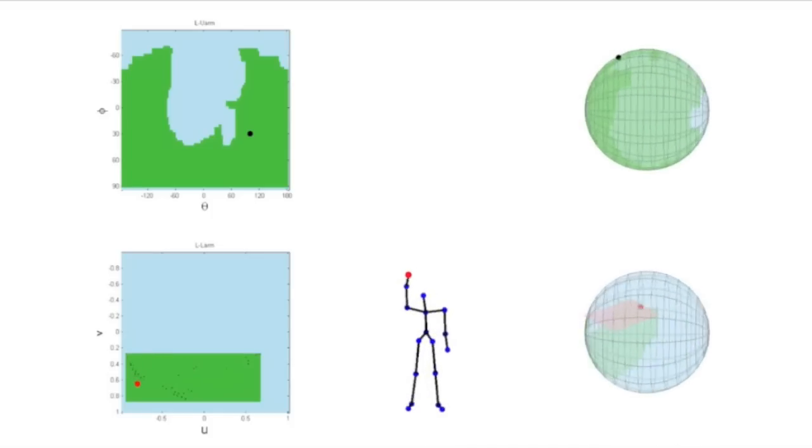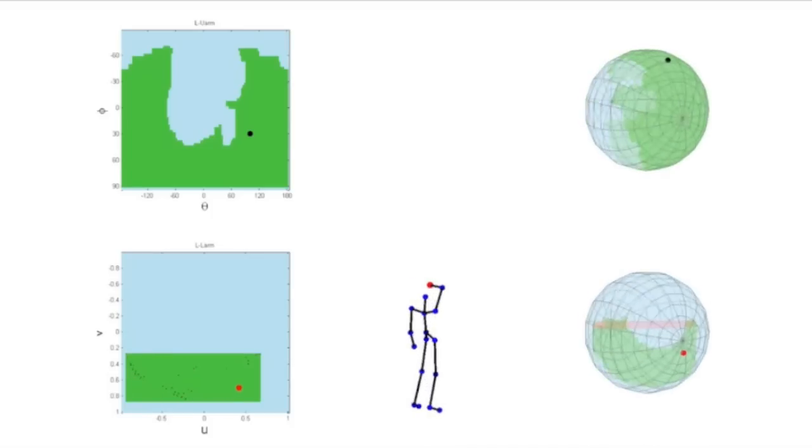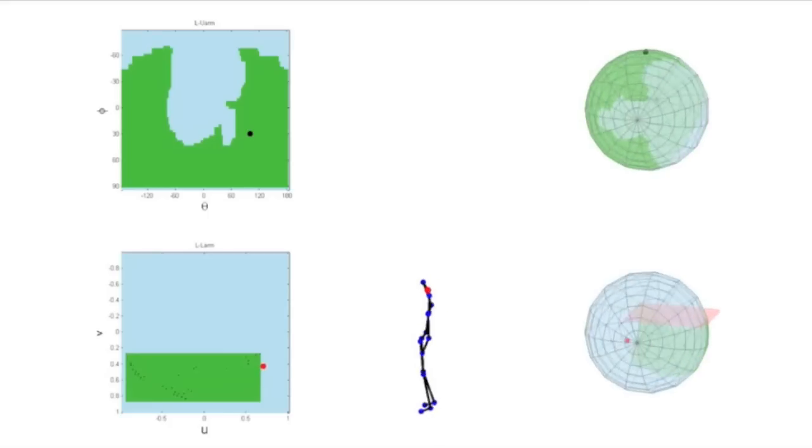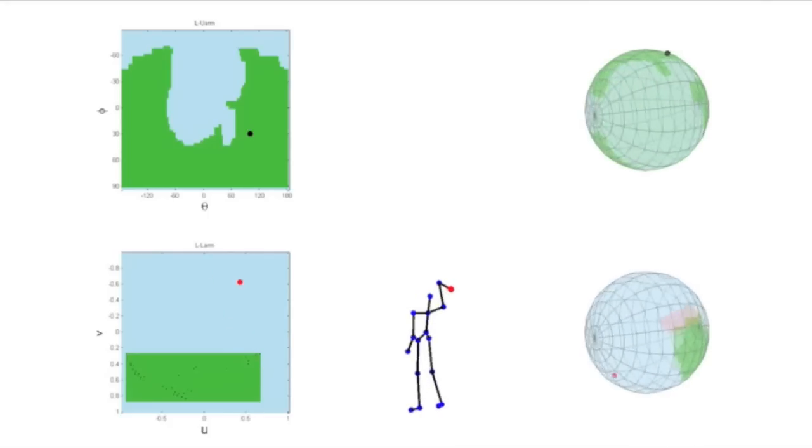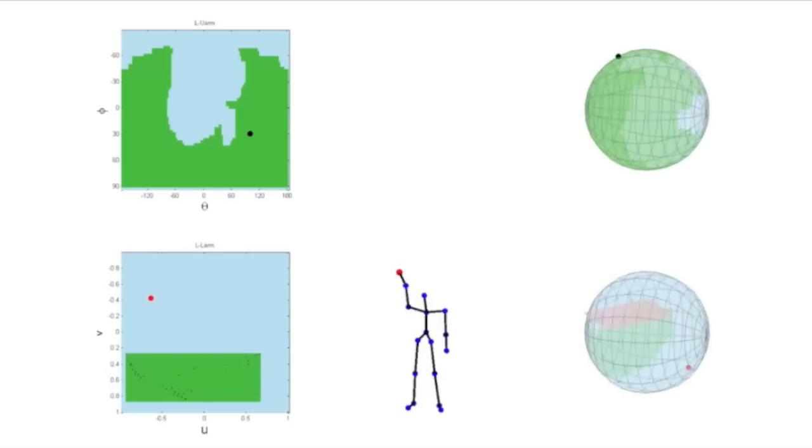As you can see in the bottom middle, moving around in the green area gives a valid 3D pose for the wrist, whereas moving out of this planar patch makes the pose invalid. Moving out of the half space shown in the bottom right also makes the pose invalid.